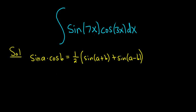Alright, so in this problem our a is 7x and our b is 3x. So we have sine of 7x cosine of 3x.